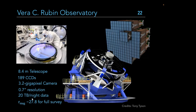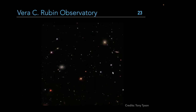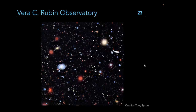The Rubin Observatory will be very deep — after 10 years of full operation, it will reach about 27-28 magnitude in the r-band. With its 3.5-degree field of view and that depth, it covers a huge part of the sky far deeper than most current survey telescopes reach. On screen, comparing an SDSS image patch with the same patch from Rubin gives a dramatic sense of the improvement in resolution and source density.